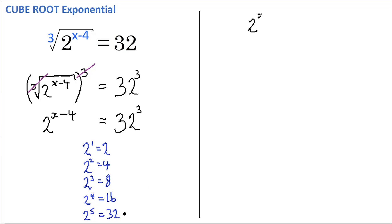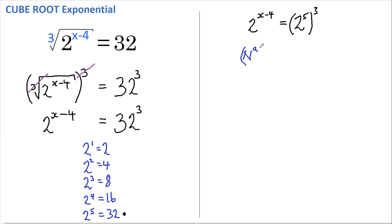So we have 2 to the x minus 4 equals 2 to the power of 5, all raised to the power of 3. Now how do we resolve this situation where we've got a number raised to a power and it's all raised to another power? Well, there's a rule that says if we have a number raised to another power, we can rewrite that as that same number raised to the powers multiplied together.